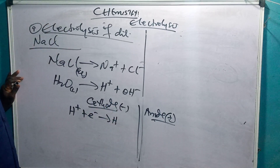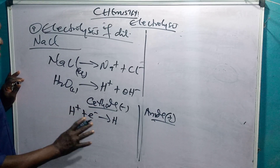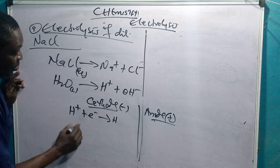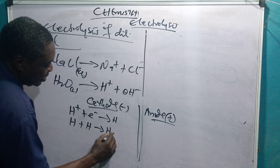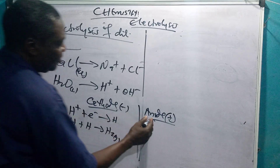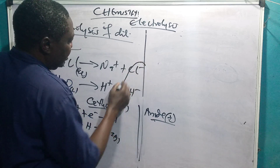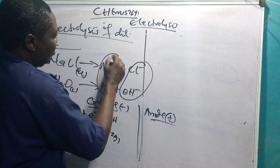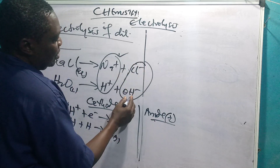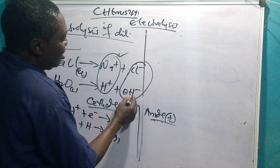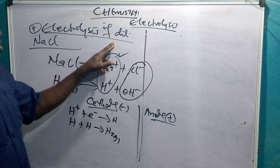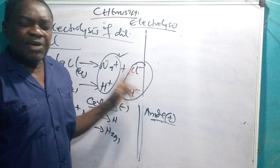Hydrogen ions go to the cathode, which is rich in electrons, and pick up one electron each to become atomic hydrogen. Atomic hydrogen cannot exist alone, so atomic hydrogen atoms combine with another hydrogen atom to give you hydrogen gas, H₂, which is given off as bubbles. Meanwhile, at the anode, the chloride ion also migrates there.